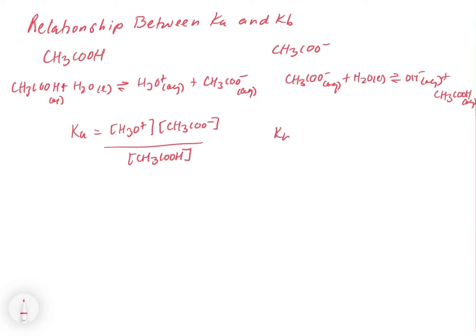And so if you write out the Kb for the conjugate base, you get OH minus times the concentration of acetic acid divided by the concentration of acetate.